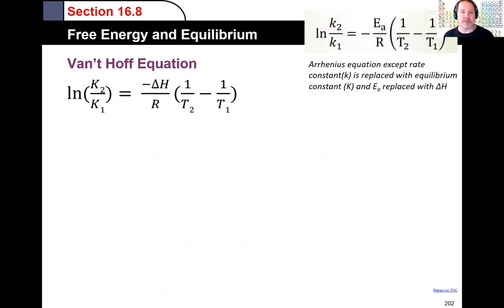All right, so what is this equation? Where did it come from? Well this is very similar to some other equations. One of them being the Arrhenius equation which looks almost exactly like it except the capital K's are replaced with rate constant k's, little k's, and you have activation energy instead of enthalpy. Everything else is the same.